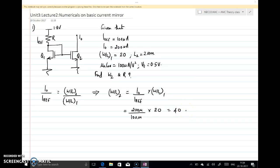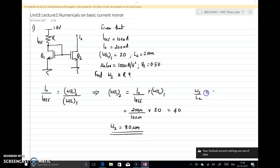So W by L of 2 is given as 40. L2 is given as 2, so your w2 is equal to 80 micrometers. This is given that W2 by L2 is 40, so when your L2 is equal to 2 micrometers, your w2 should be 80.